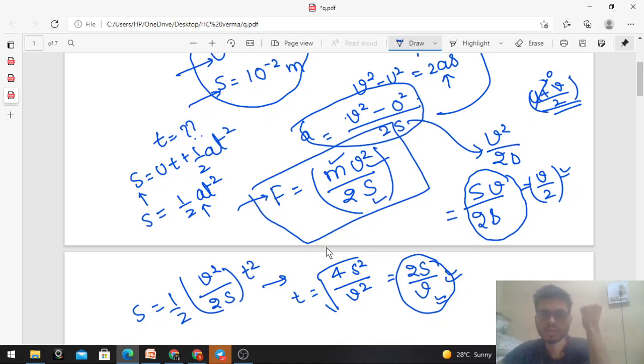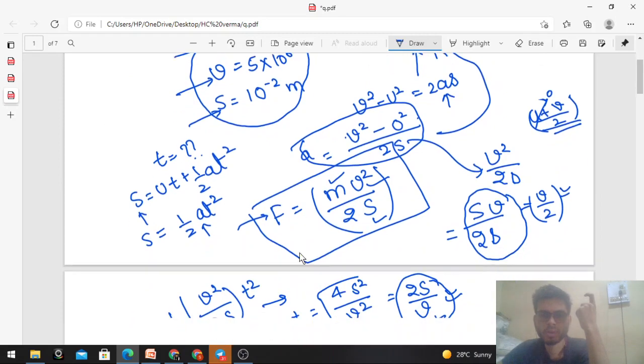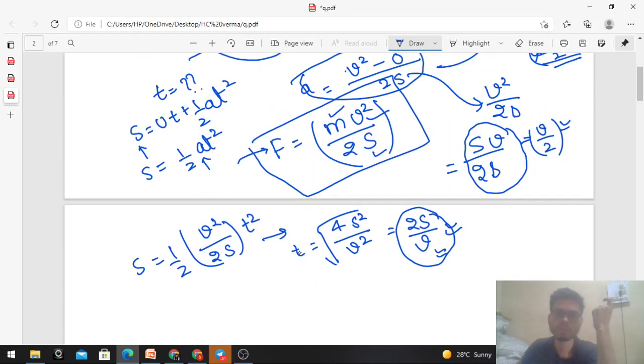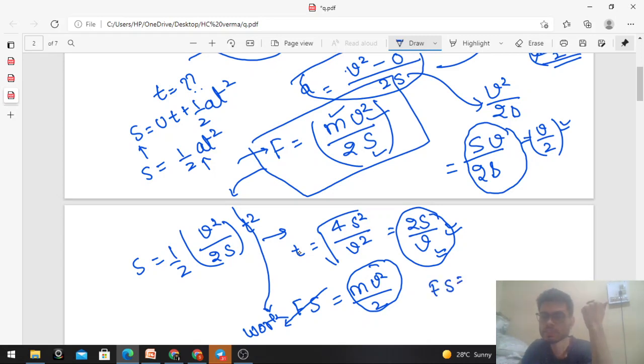If you observe this equation carefully, you can relate it to work-energy theorem. We wrote F = mv²/2s. If we move s to the other side, Fs = mv²/2. F×s is work done by the force, and mv²/2 is kinetic energy. If we consider the general case with v² - u² from the first equation, Fs = m(v² - u²)/2, which is final kinetic energy minus initial kinetic energy equals work done. Work done by the force equals change in kinetic energy.